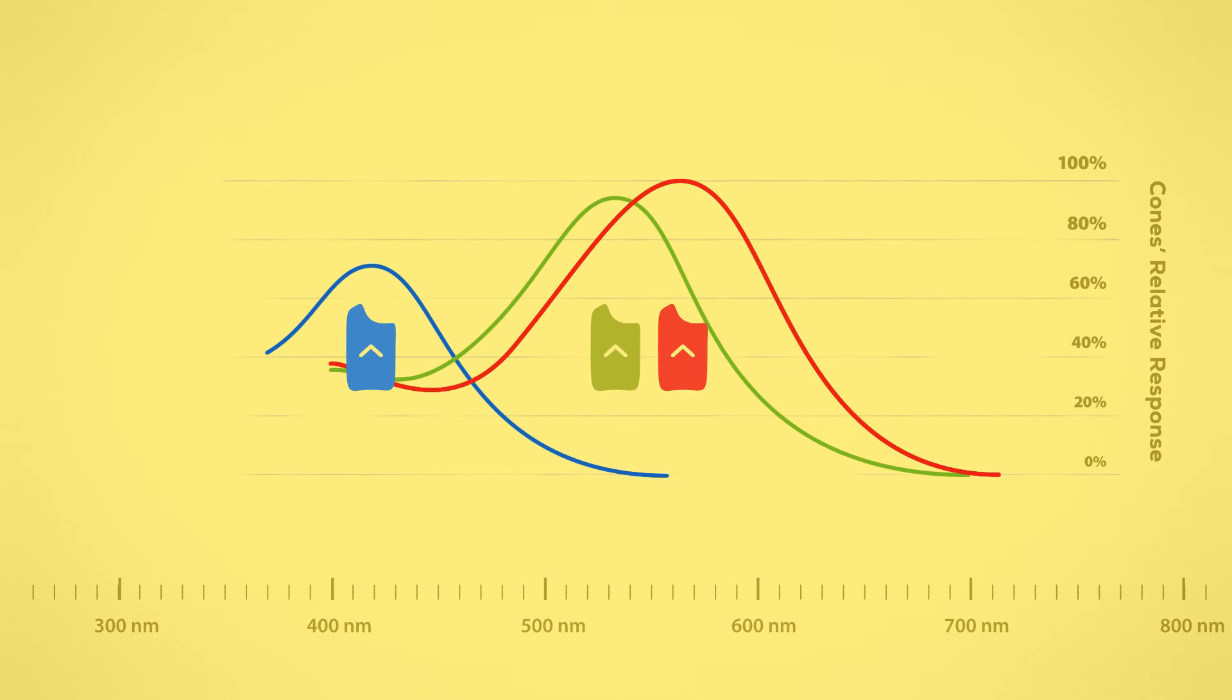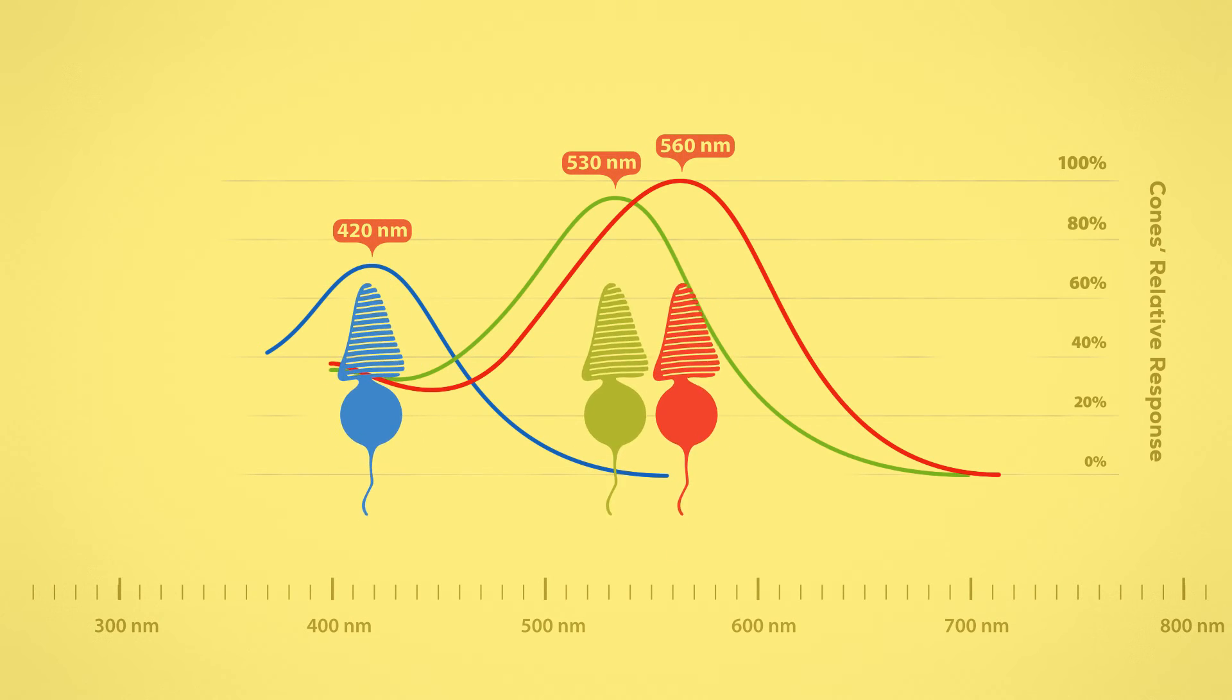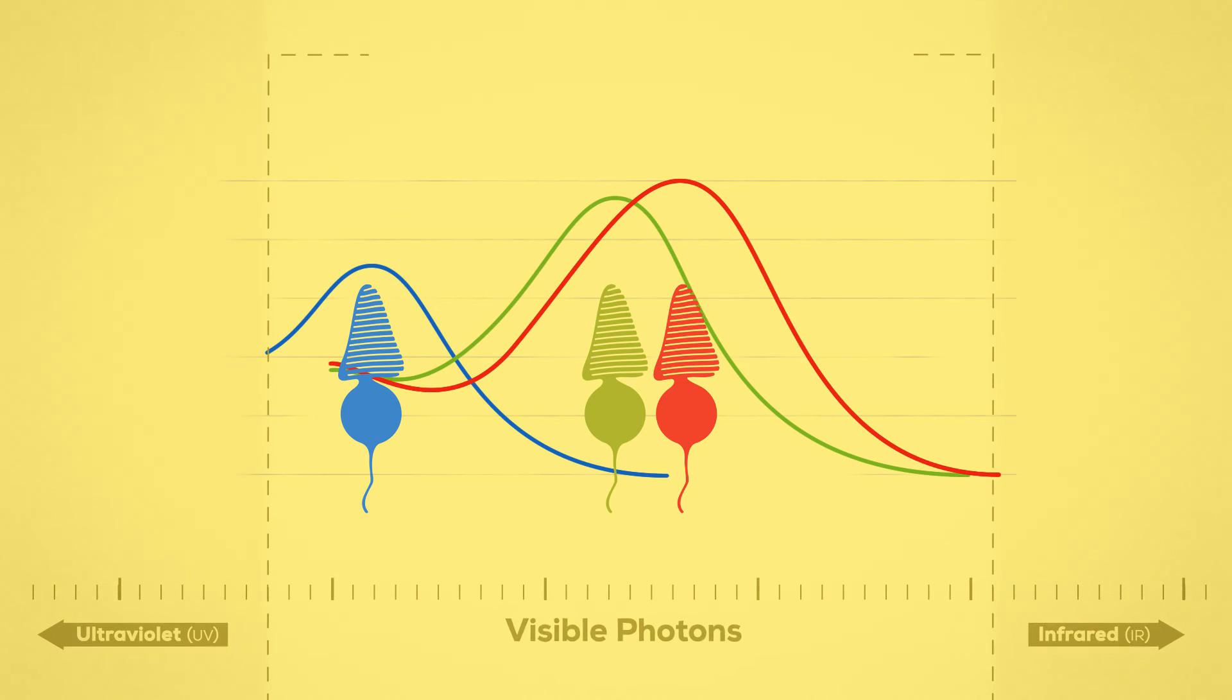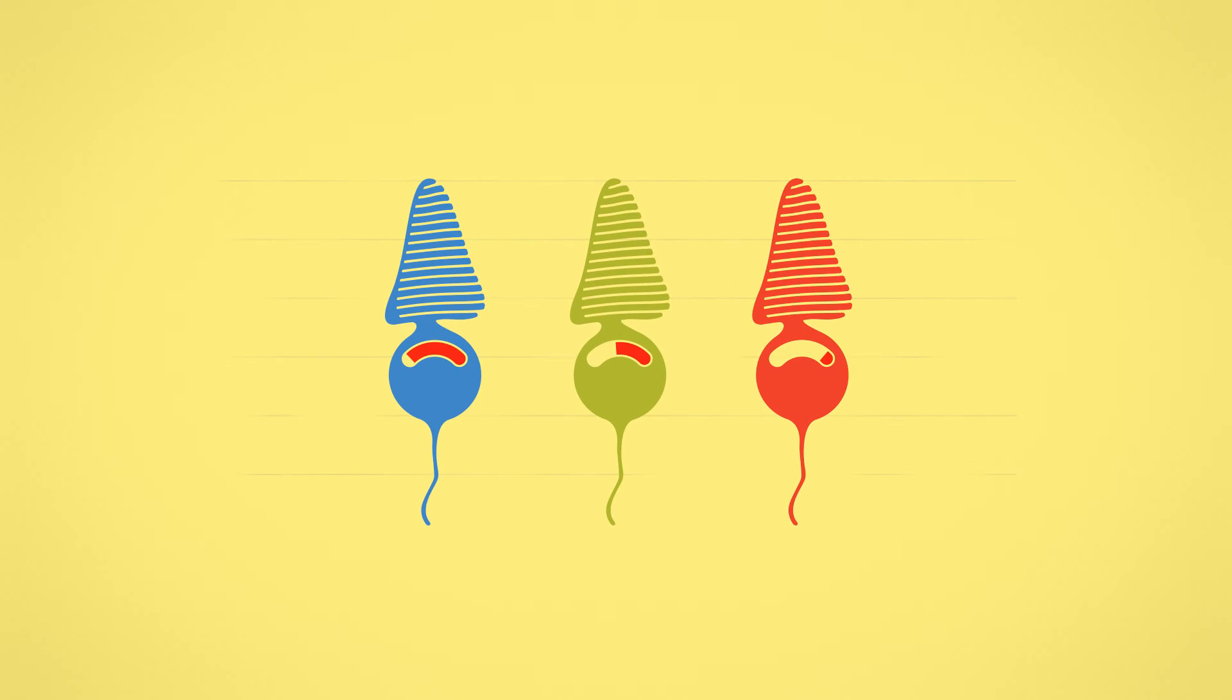Humans have three types of photopsin, each with a different preference. Together these three types of cone can absorb all the wavelengths we can see. Photons from red things are the longest. The short-wave cone can't detect these, but both the medium and long-wave cones do, and together produce the neural pattern for red.